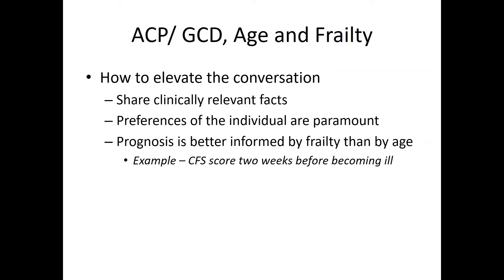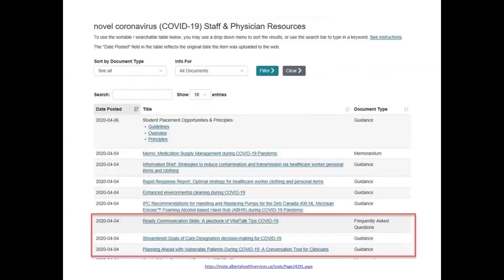A caution: when talking about frailty, I am not talking about the score you apply based on their acute illness in the moment. I am talking about the score applied based on their baseline — the way they were say two weeks before they became ill. The importance is having these conversations and letting frailty give context to the advanced care planning and goals of care designation conversations.